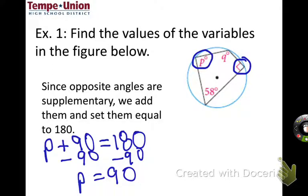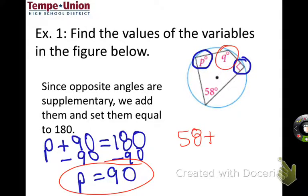Same thing for the q. We can just say 58 plus q equals 180, and then just subtract 58. So 180 minus 58 is 122.